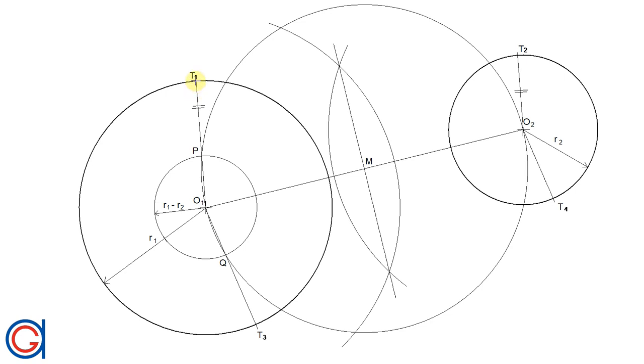Now with a thicker line we will join tangent point T1 to T2 and tangent point T3 to T4.